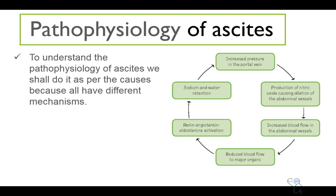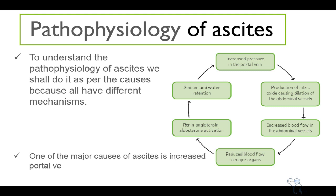Increased pressure in the portal veins leads to production of nitric oxide, causing dilation of the abdominal vessels. This dilation causes an increase in blood flow to the abdominal vessels, reduced blood flow to the major organs, activation of the renin-angiotensin-aldosterone system, and sodium and water retention — feeding back into increased pressure in the portal system.